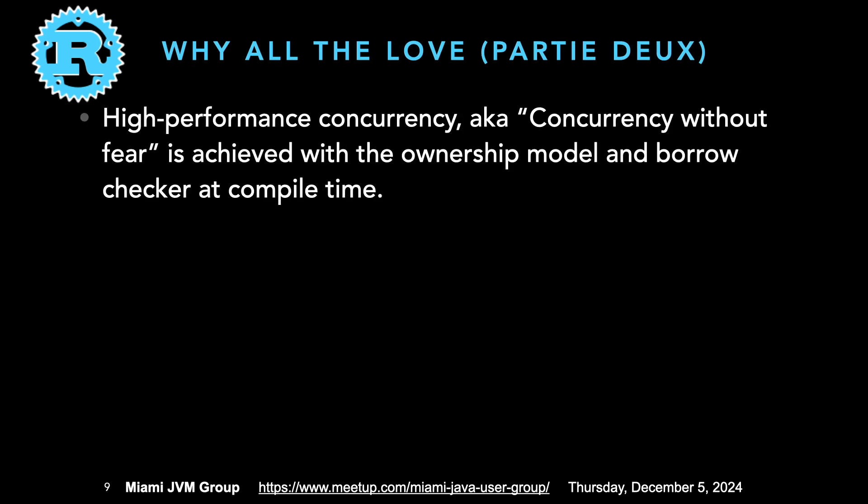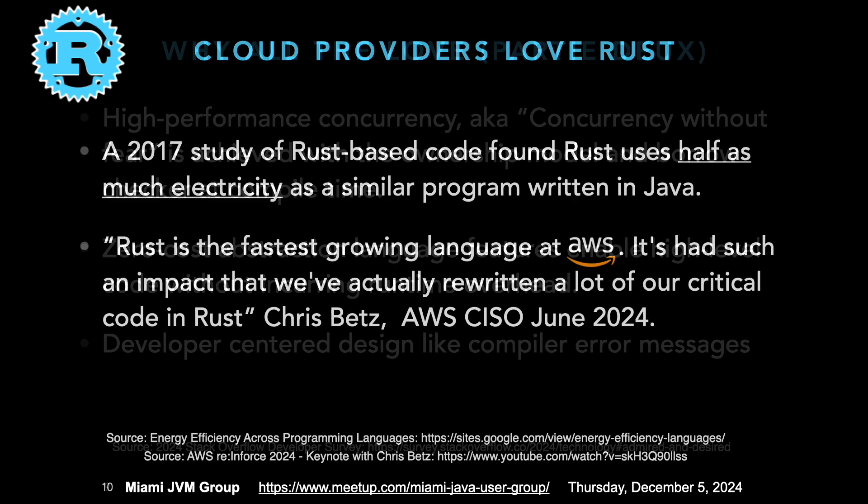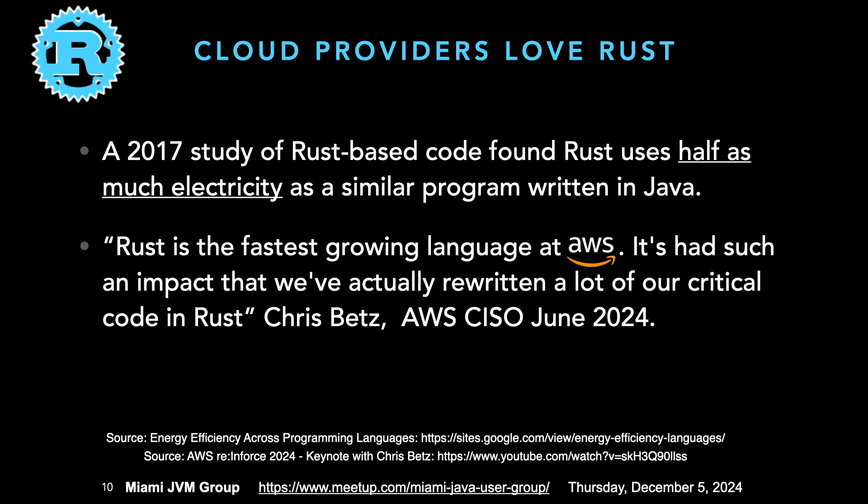There's also high performance and concurrency as a side effect of the ownership model and borrow checker at compile time. It has this feature called zero-cost abstraction, similar to what you hear in C++: if you don't use the feature, it's not included in the runtime. Cloud providers love Rust too. This starts with a 2017 study showing how Rust uses half as much electricity as a similar program written in Java. From the perspective of AWS and other providers with huge Java infrastructure, being energy efficient saves a lot of money.